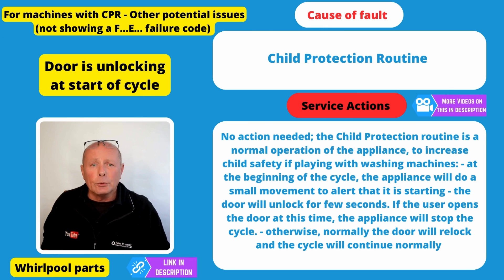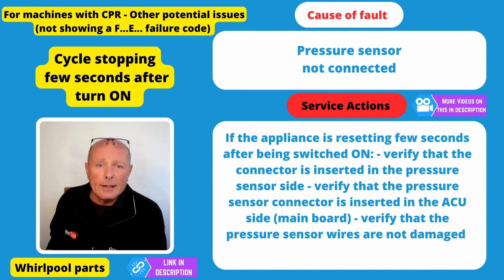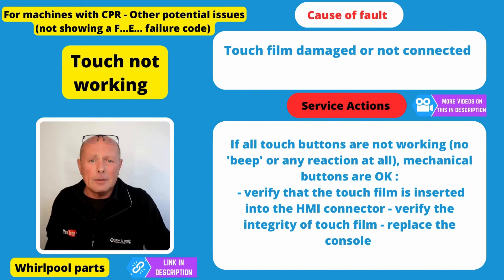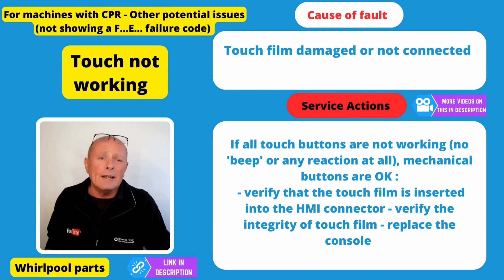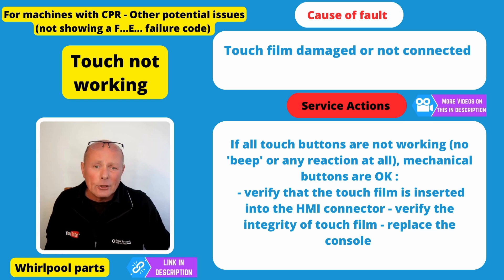These next potential faults are to do with scenarios that may occur where there's no error code shown on your display screen. The door unlocking at the start of the cycle could be due to the child lock system on the machine. The machine switching off after a few seconds and not running through a cycle may indicate a problem with the pressure sensor — either not connected, faulty, or bad wiring. The touch display not showing an error if it's not working could be due to a faulty display, bad wiring, or — from my own experience — if the earth is not connected to the machine, you don't get grounding and it can't sense that you're actually touching the display.